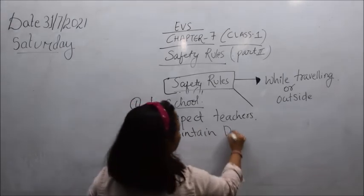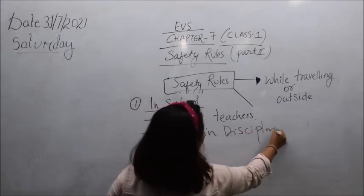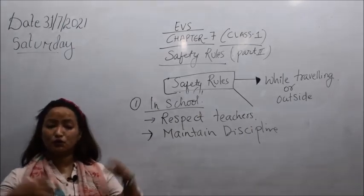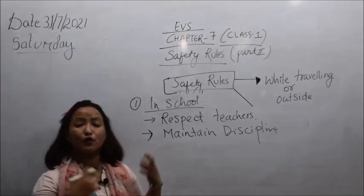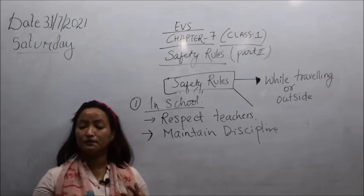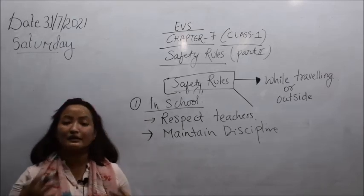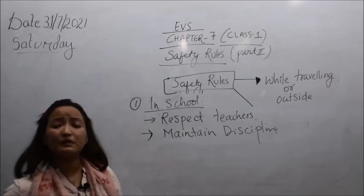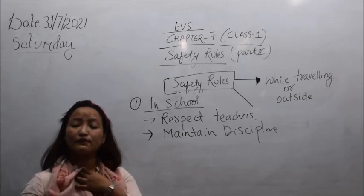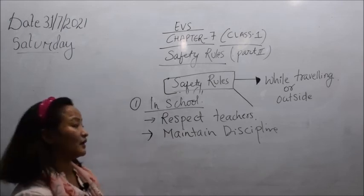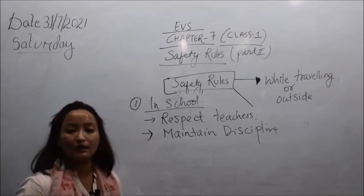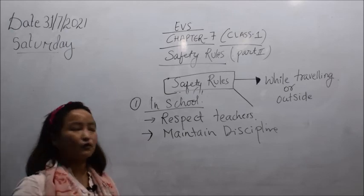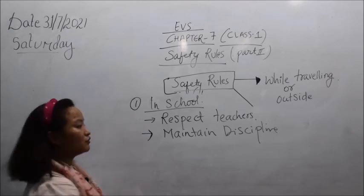The second school rule: maintain discipline. In every school there are rules and regulations and we have to maintain discipline wholeheartedly. Discipline means following whatever the school authority — your principal and teachers — say. You should not argue with the rules; you should follow them.